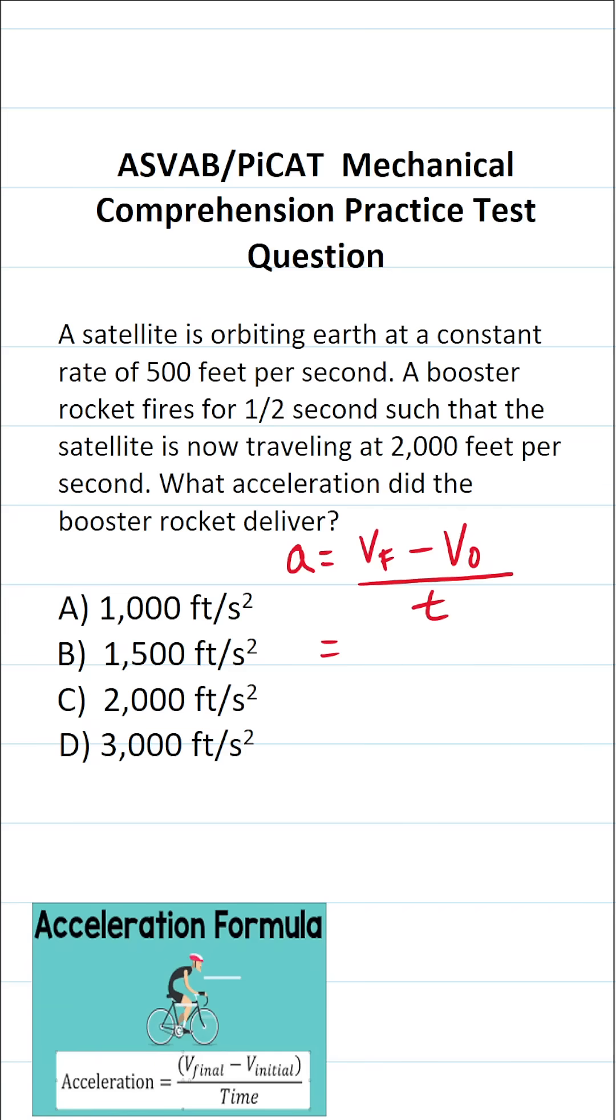Of course, we know our final velocity is going to be 2,000 feet per second. Our initial velocity was 500 feet per second. And as it happens, this booster rocket fired for half a second, so our time is going to be one half.